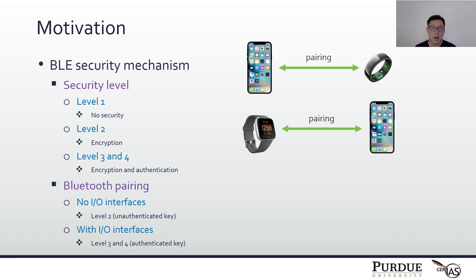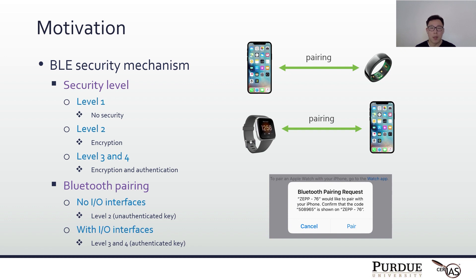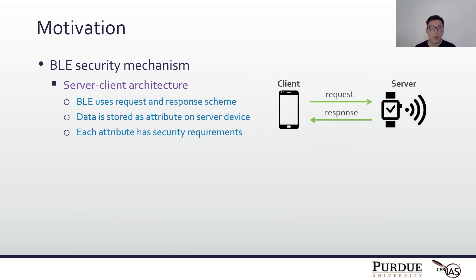But if both devices have I/O capabilities, during pairing, a notification will be popped up to the user to check whether the two PINs shown on these two devices are the same or not. If they are the same, the generated key is authenticated and can be used in security level 3 and 4. Different from Bluetooth classic, BLE has a server-client architecture. The client and the server communicate in a request-and-response scheme. The data is stored on the server as attributes, and each attribute can have a different security requirement.